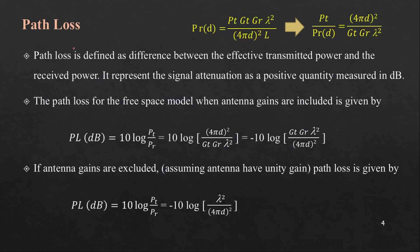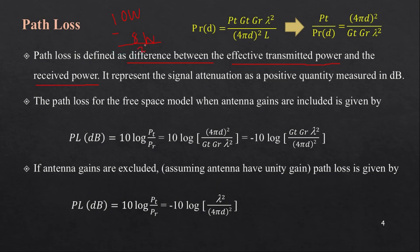Path loss is defined as the difference between the effective transmitted power and the received power. For example, if the transmitter sends 10 watts and the receiver only receives 8 watts, then 2 watts are lost — that is the path loss. Path loss represents signal attenuation as a positive quantity measured in decibels. The path loss for the free space model when antenna gains are included is derived from the Friis equation.